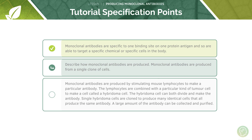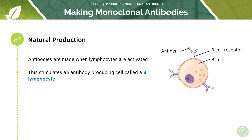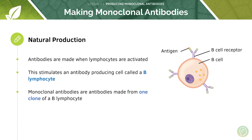Now let's look into how monoclonal antibodies are produced. In general, antibodies are made when B lymphocytes are activated. The B lymphocyte is activated and it then divides to produce plasma cells, which are your antibody-making cells. Monoclonal antibodies are antibodies made from one clone of a B lymphocyte - so not different B cells making the same antibody. It's got to be the same B cell, or a clone of that B cell, that's making the antibody in order for it to qualify as a monoclonal antibody.